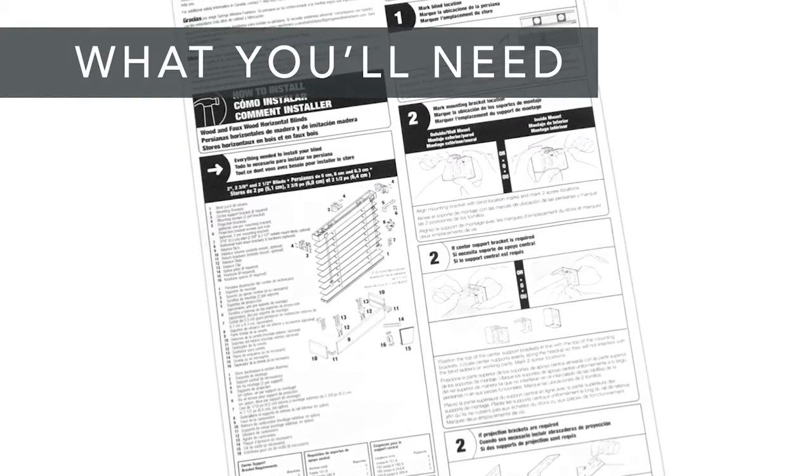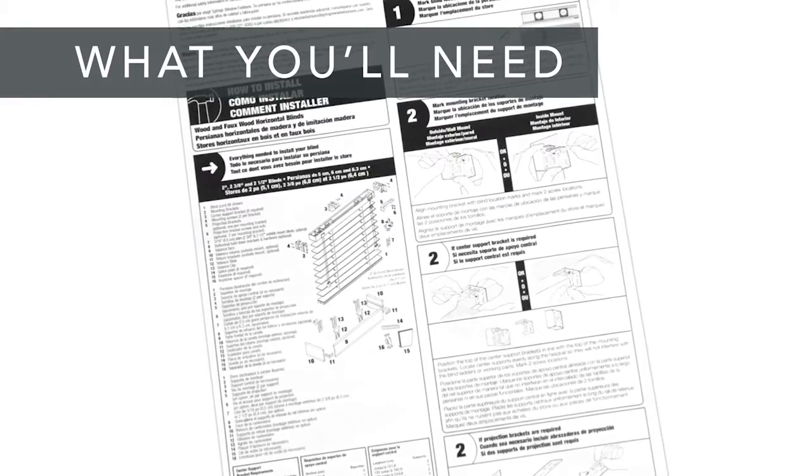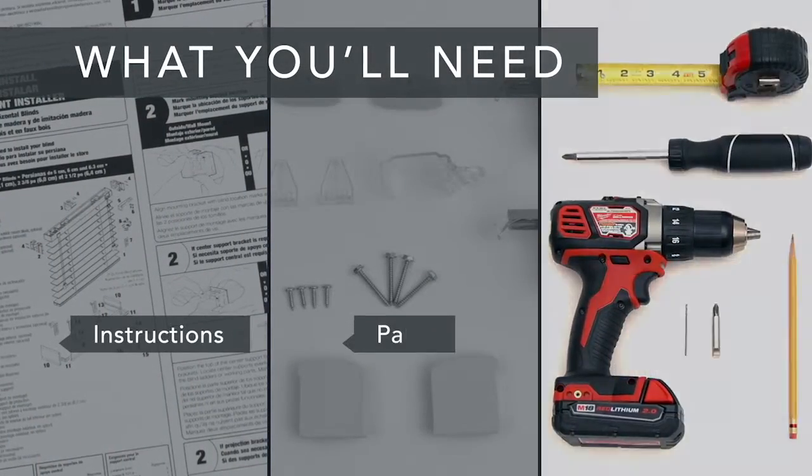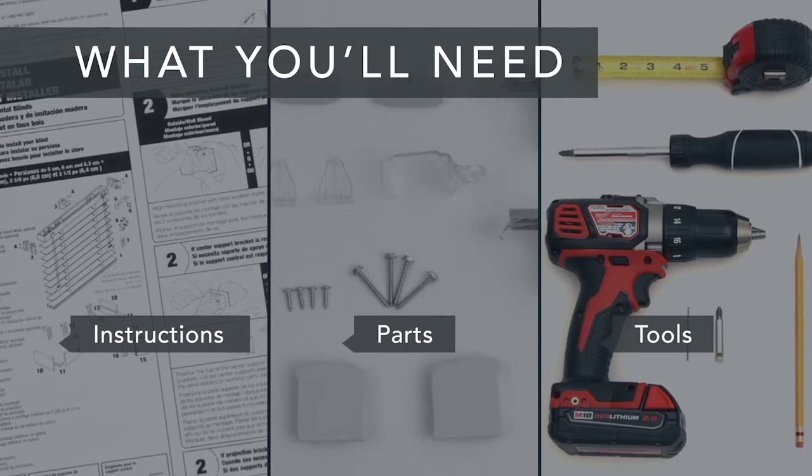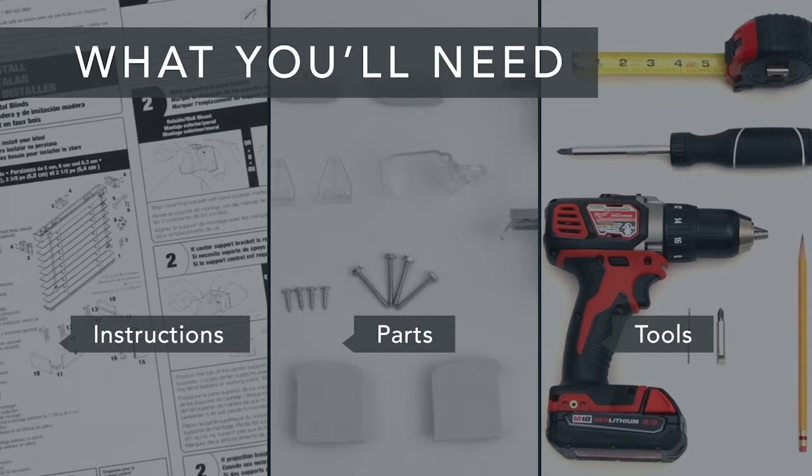First, take a look at the installation guide that was included with your blind. Make sure you have all of the parts and all of the tools you'll need. And if you're installing into anything other than wood, get the appropriate screws and anchors.